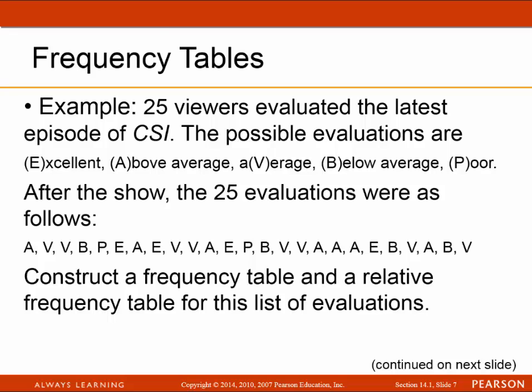Here's an example: 25 viewers evaluated the latest episode of CSI. The possibilities were excellent, above average, average, below average, or poor. After the show, the 25 evaluations were recorded, and we're going to construct a frequency table and a relative frequency table that lists these evaluations.